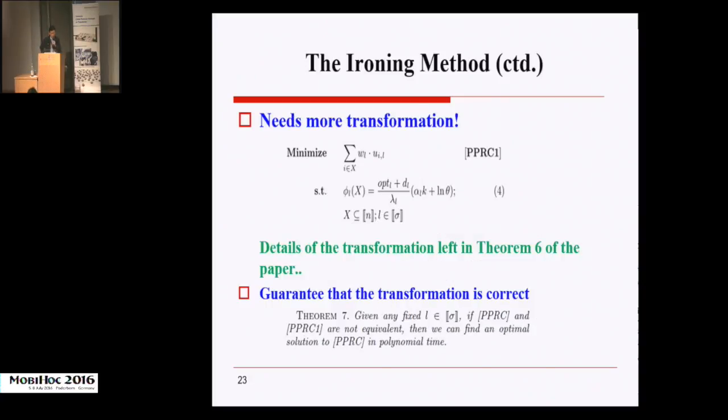With all the above results, we still cannot solve the problem. We quote the best known result for the submodular cover problem. We can see that it requires several conditions besides the submodular property in order to get a nice approximation ratio. So we need more transformations. However, I will leave the details in the paper. After the transformation, we finally get the PPRC1 problem. Fortunately, we prove that either this problem is equivalent to the original problem, or the original PPRC problem can be optimally solved in polynomial time. So this is a very good result.